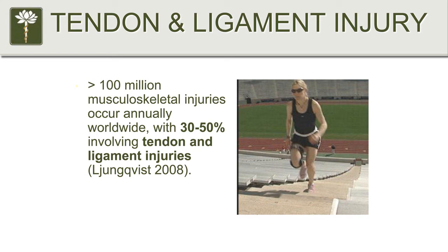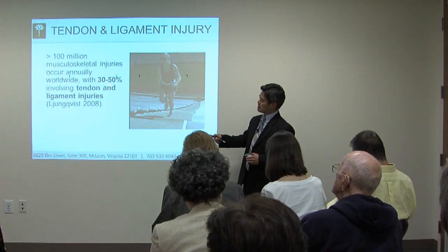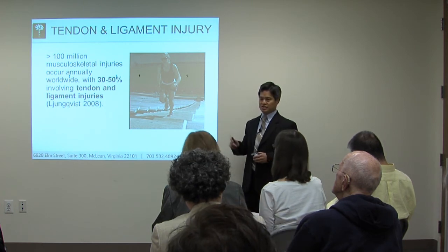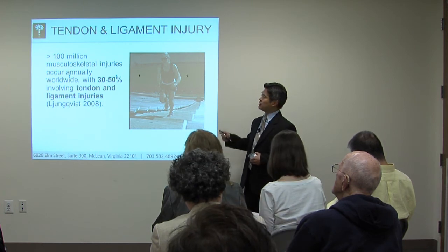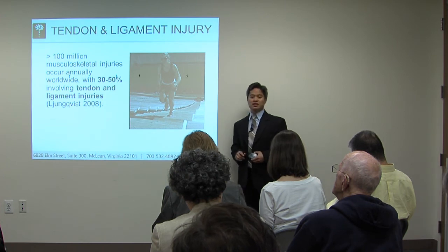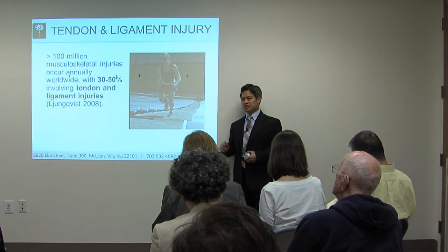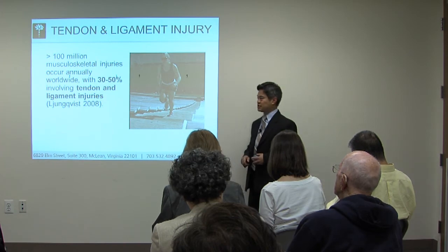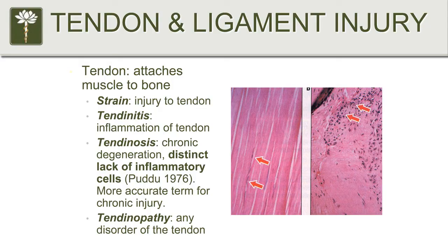About 30 to 50 percent of all musculoskeletal injuries are ligament and tendon injuries, and there are over 100 million musculoskeletal injuries worldwide per year — so that's many millions of injuries to the tendons and ligaments. Let's take a closer look at these structures.